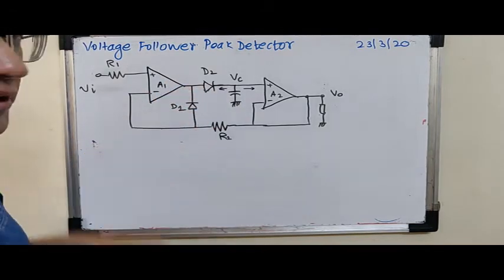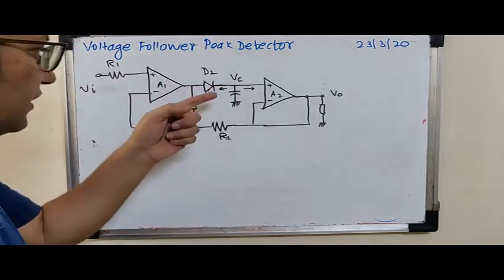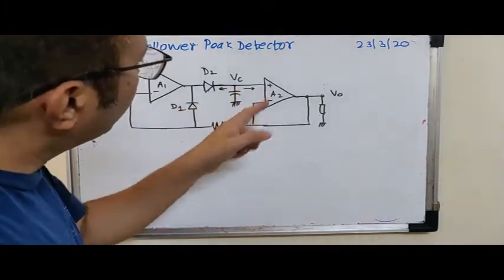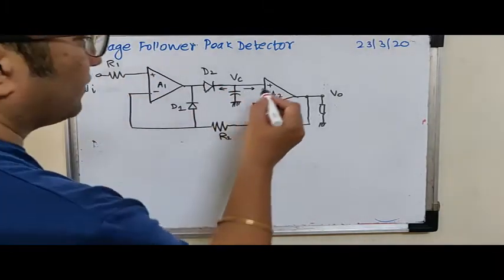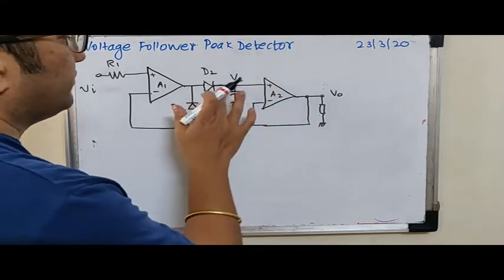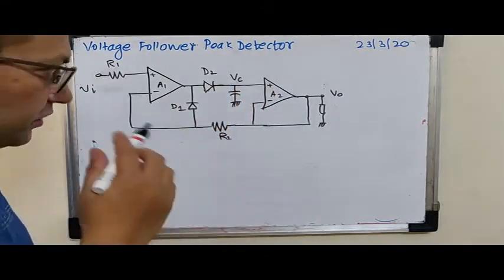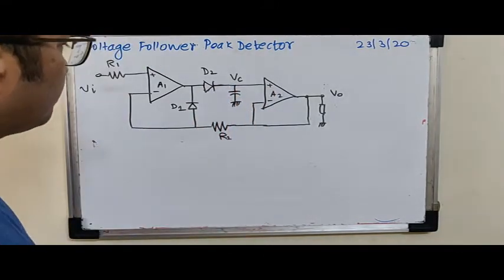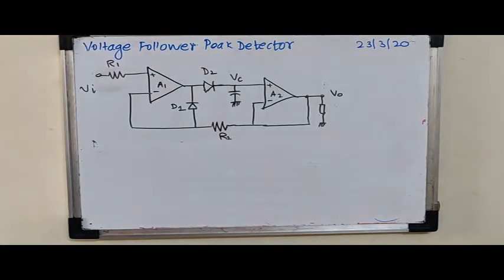the diode is reverse biased, so the reverse leakage current is one discharge path. Input bias current of A2 is another discharge path, so we have already eliminated one major discharge path that was the R2 in the previous circuit. So how does this circuit really work?